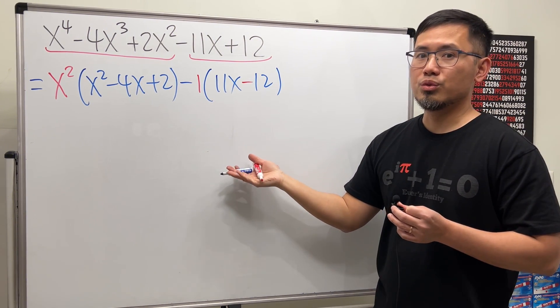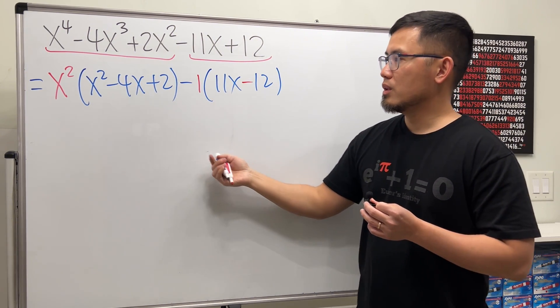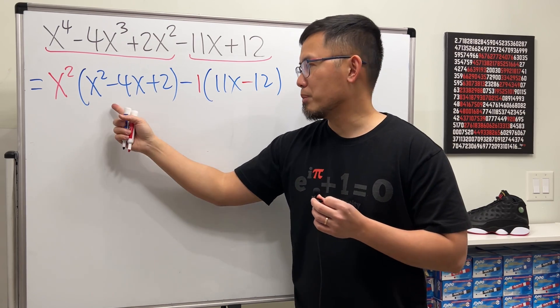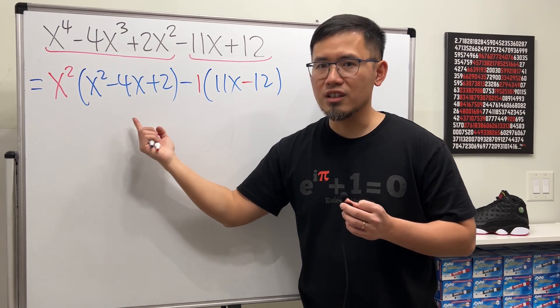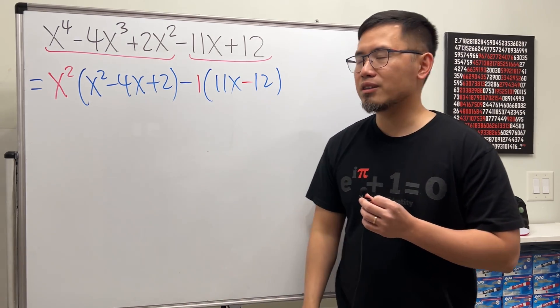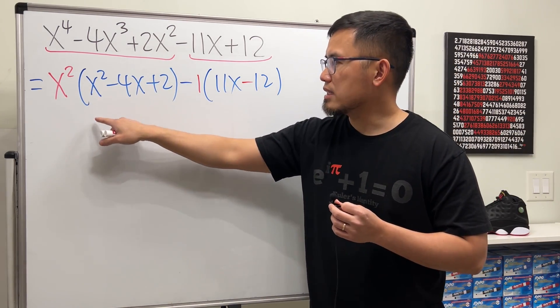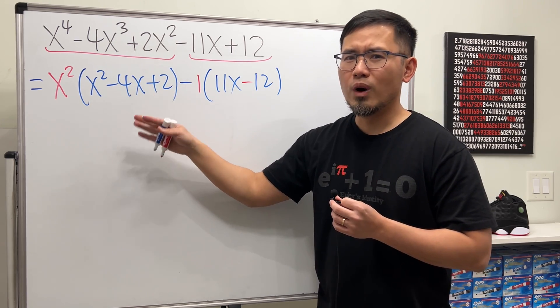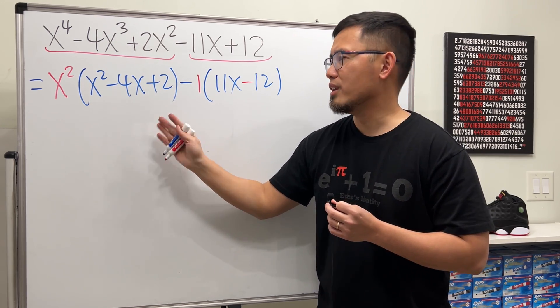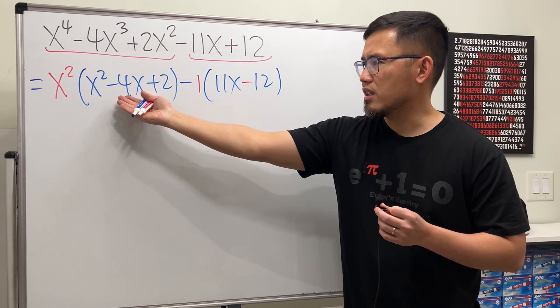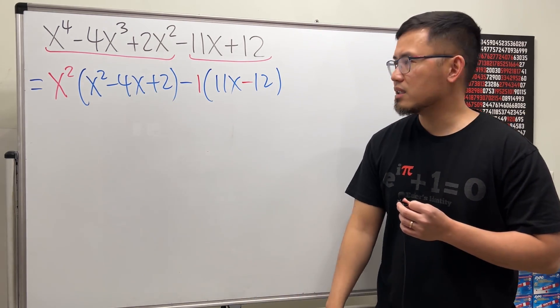Can we continue, though? Well, this is a quadratic trinomial, but unfortunately this is not factorable. You can try it — x times x, and then this is like 1 and 2, or negative 1 and negative 2. There's no way to get negative 4x.